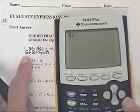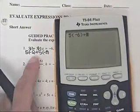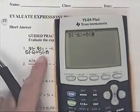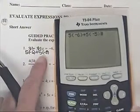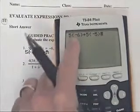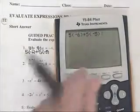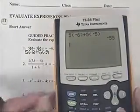I'm going to go 5, parentheses, negative 6, parentheses, plus 5, parentheses, negative 5, parentheses. And what that's going to do is multiply 5 times negative 6, multiply 5 times negative 5, and then add those two numbers together and give me negative 55.